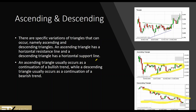In the ascending triangle, the resistance line can be slightly on an angle. In a standard symmetrical triangle, we have a beautiful point of congestion where the two lines merge, and then we have a breakout. The breakout broke upward, and we could measure this because the top of the breakout is usually equal distance from the top to the bottom of the opening of the triangle. We can measure that distance.